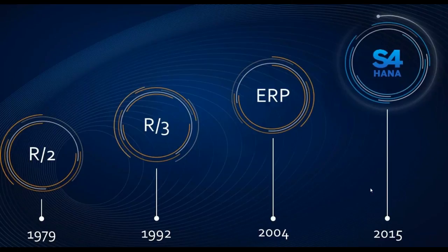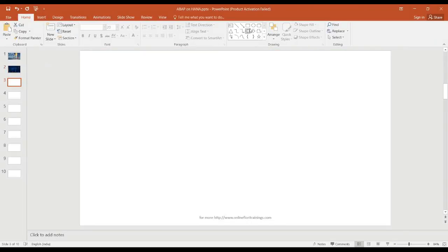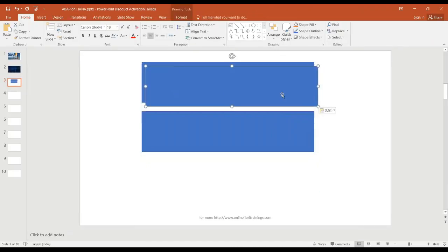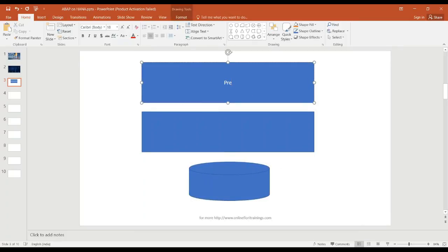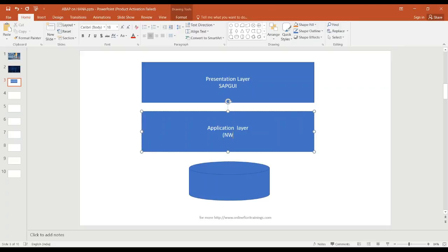Let's get started with the introduction of an ABAP on HANA system and how it is better than your typical R3 system. In the R3 system architecture, we have those three layers: presentation, application, and database layer. In the presentation layer, we talk about SAP GUI, where the user interacts with the ERP system. In the middle, we have the application layer, which is based out of Netweaver Foundation. Netweaver is the technical platform on top of which all SAP applications are based. This provides the runtime for your ABAP-based applications.